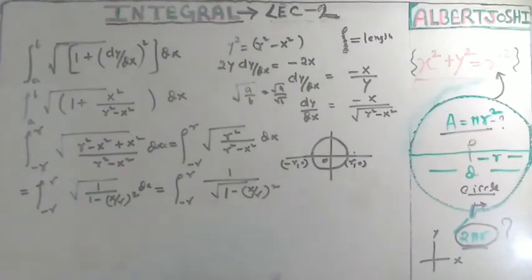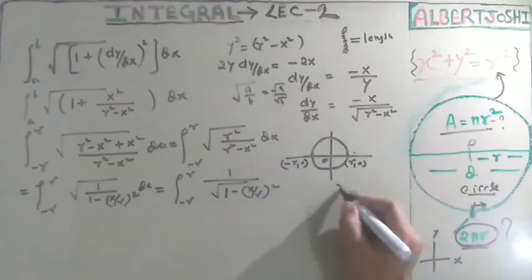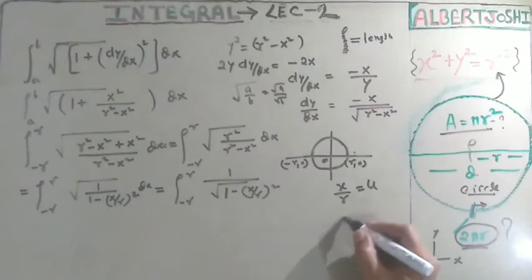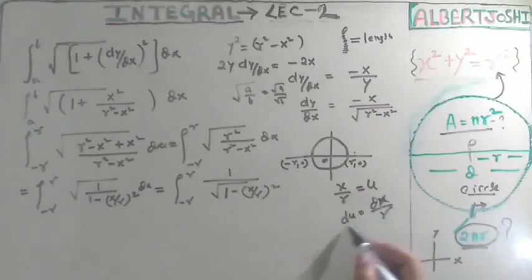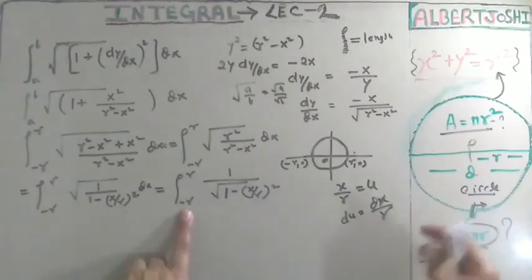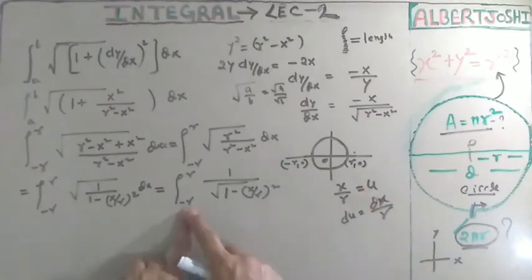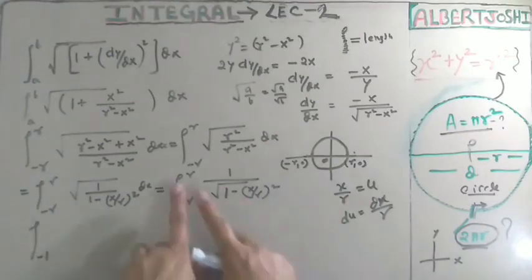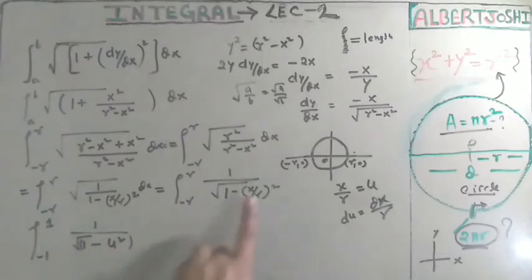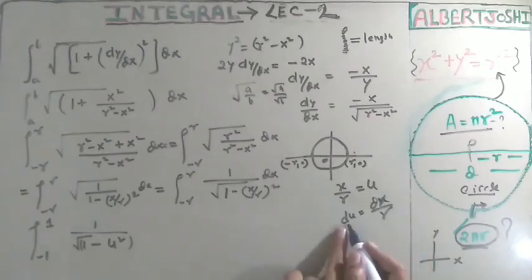We know the formula ∫ 1/√(a²−x²) dx = sin⁻¹(x/a). Before applying it, let u = x/r. Then du = dx/r, so dx = r·du. When x = r, u = 1; when x = −r, u = −1. So the limits change to −1 to 1, and the integrand becomes 1/√(1−u²).